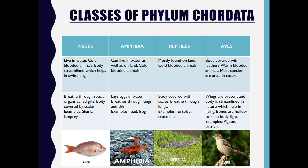Coming to Class Aves: the body is generally covered with feathers. These are warm-blooded animals — unlike Pisces, Amphibia, and Reptilia which are cold-blooded. Most of the species here are aerial in nature. Wings are present in the body. They have a streamlined body which helps them in flying, and their bones are hollow, which keeps their body light. Examples include pigeon and ostrich.